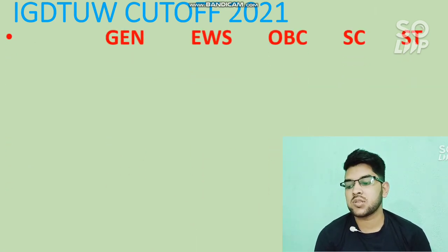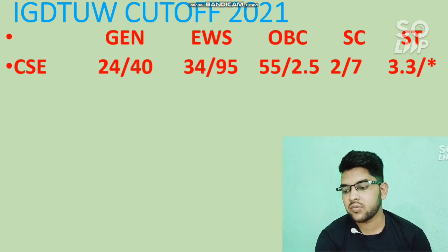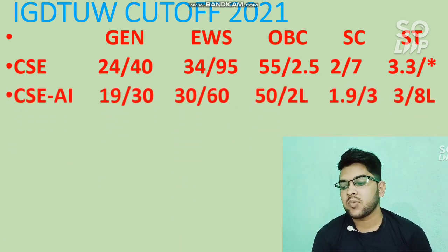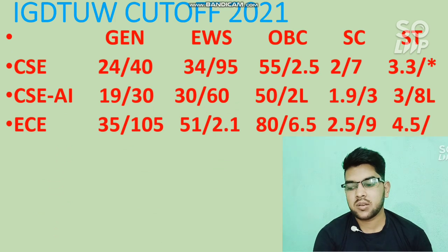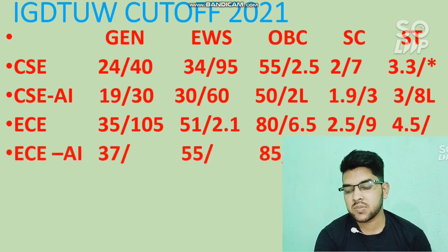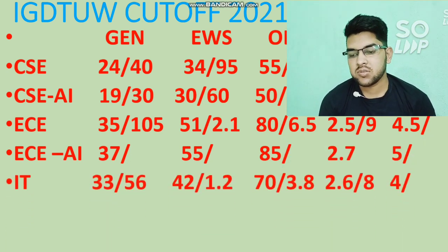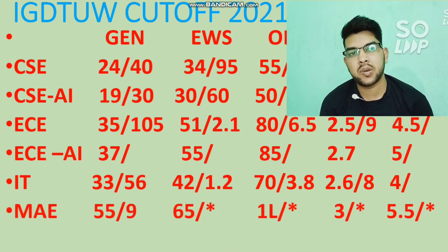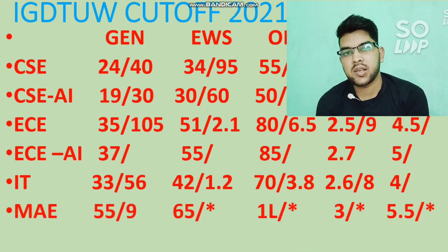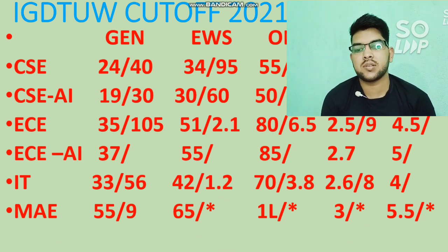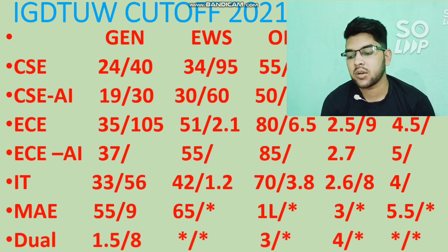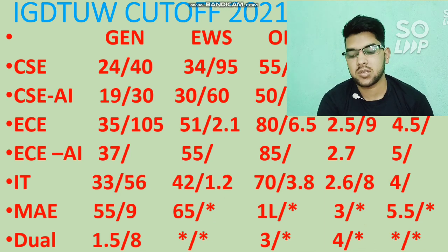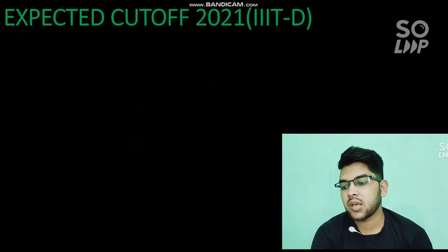For IGDTUW cutoff 2021: CSC branch — 24,000 and 40,000. CSCAI — 19,000 and 30,000. EC — 35,000 and 1,05,000. EC AI — 37,000. IT — 33,000 and 56,000. MAE branch — 55,000 and 9 lakh. For dual degree courses, you can get into the college up to 1.5 lakh and 8 lakh for general category. The cutoff before the slash is for outside Delhi students and after the slash is for Delhi region students. Other categories can be checked by pausing the video.